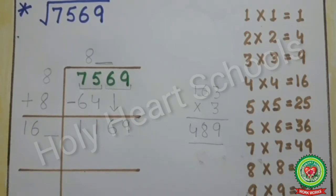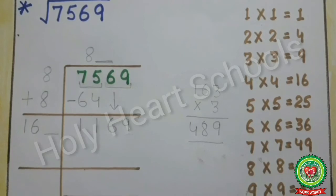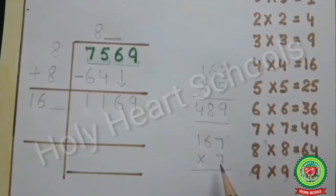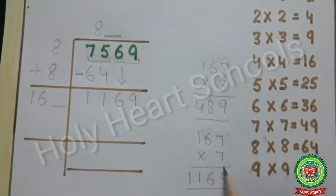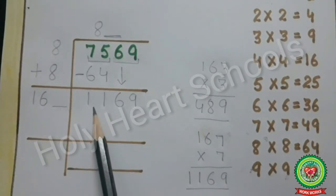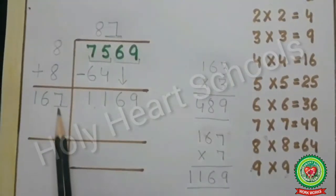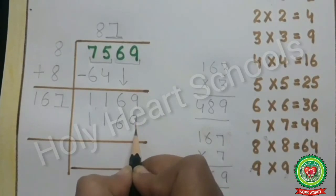Thinking further, I find digit 7: 7×7=49, last digit 9 satisfied. Checking: 167×7=1169, which equals our dividend. So write 7 with the divisor as well as with the quotient, and 167×7=1169 is written under the dividend.